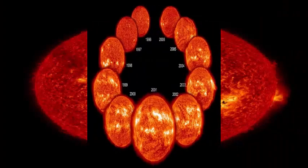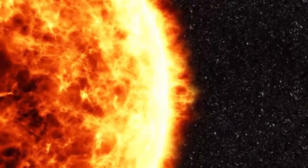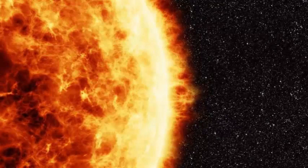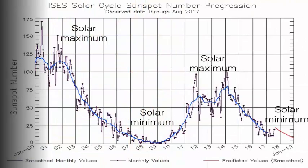Some solar maxima are larger or more active than others, such as the 1990-1991 solar maximum. But this last cycle, which culminated in 2014, was quite small, and there were few major geomagnetic storms.